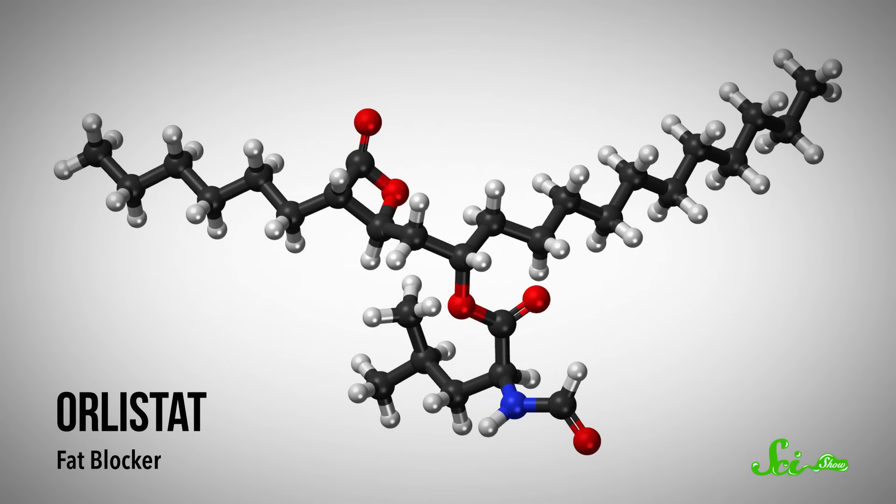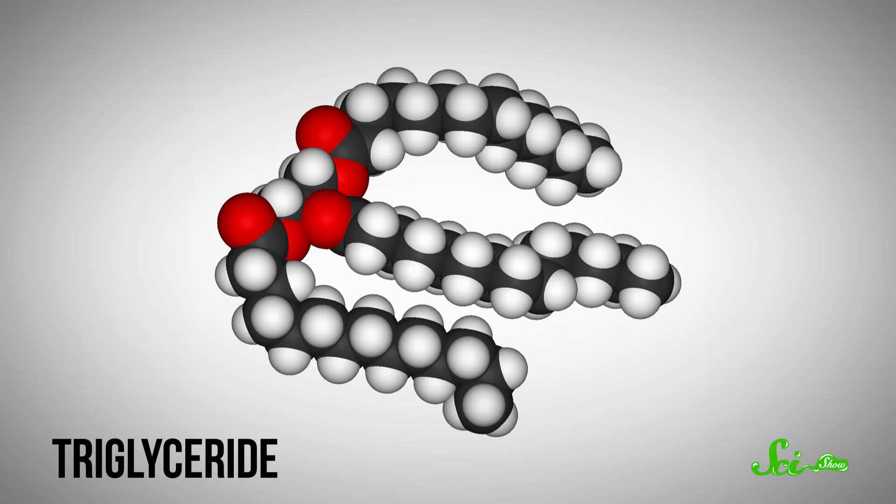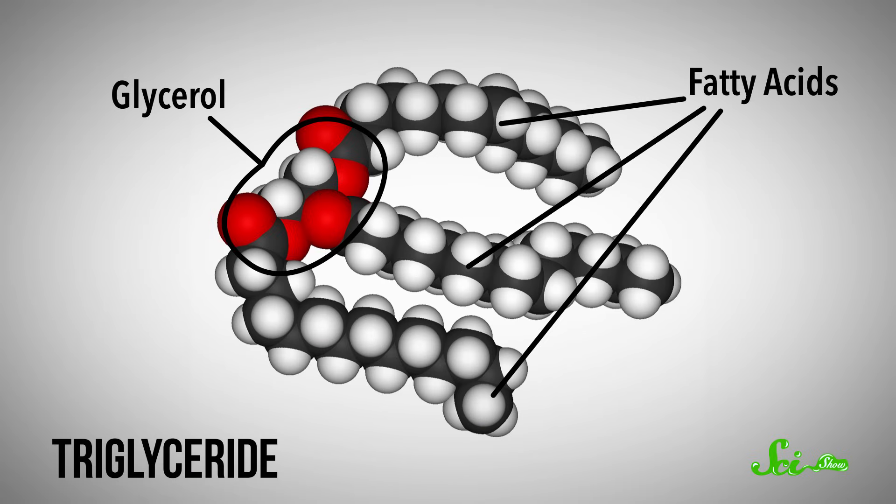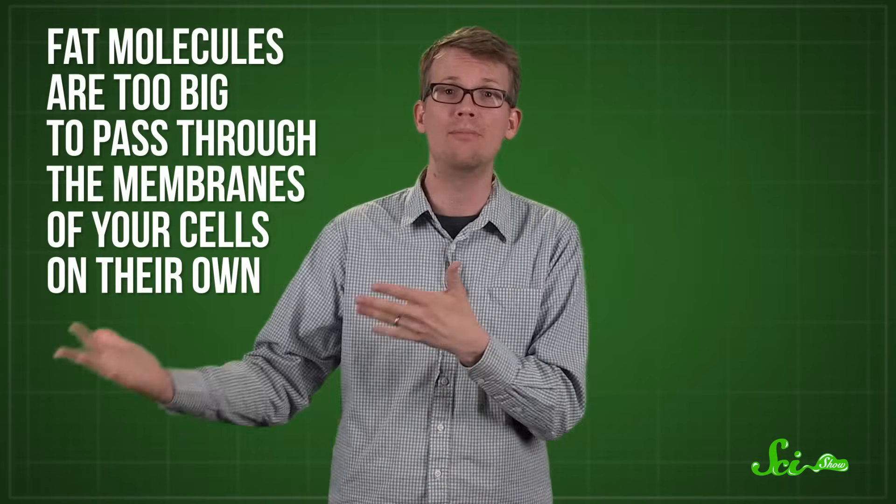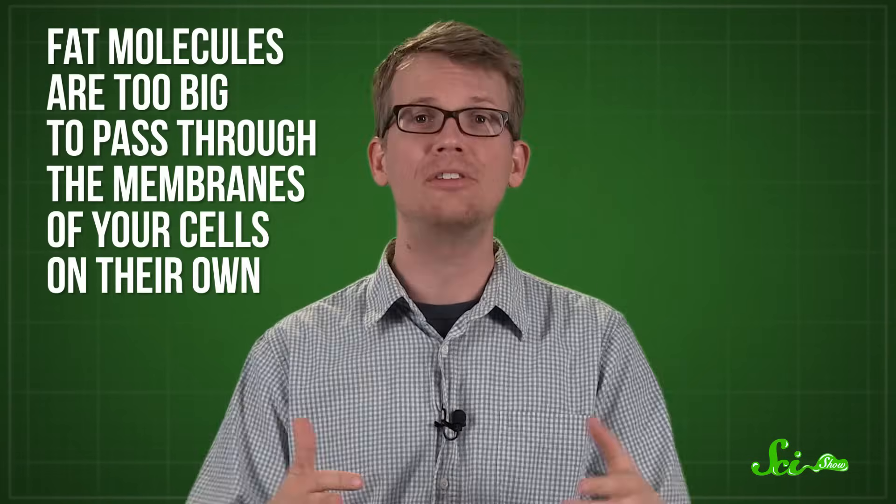Fat blockers work differently. They inhibit an enzyme known as lipase. When you eat food that has fat in it, those fat molecules need to be broken down into their constituent parts—glycerol and fatty acids—before they can pass through the walls of your intestines. That's because fat molecules are too big to pass through the membranes of your cells on their own. Lipases are the enzymes that break down those fat molecules, and in order to do that, they need to bind with them.